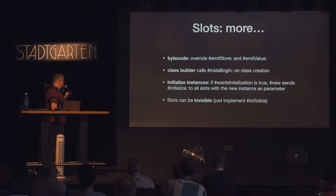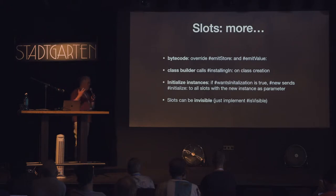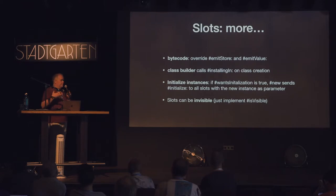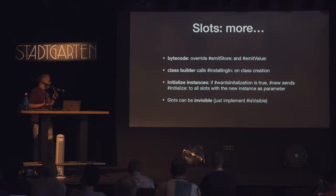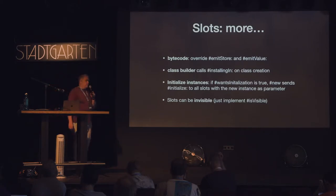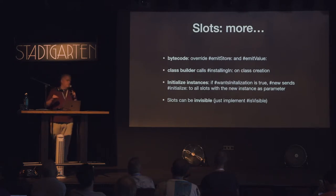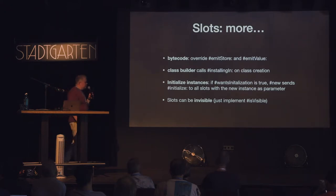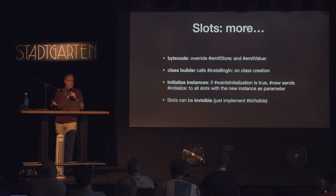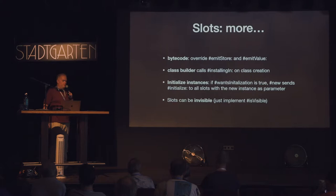The most important thing is bytecode generation, because the compiler asks the slot class to make bytecode. If you always use the reflective read fallback it would always be very slow. So you can override 'emit store' and 'emit value' and use the method builder of the compiler to emit exactly the bytecode you need. This is quite important for performance, but to get started it's not strictly necessary - from a semantic point of view, implementing read and write is fully enough.